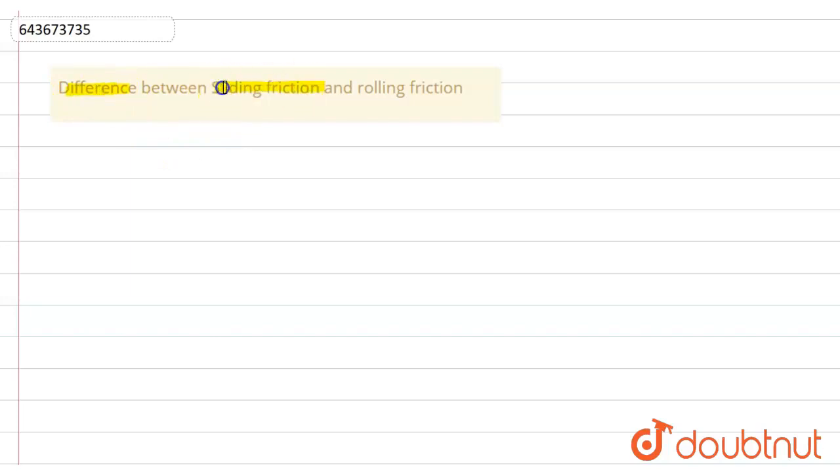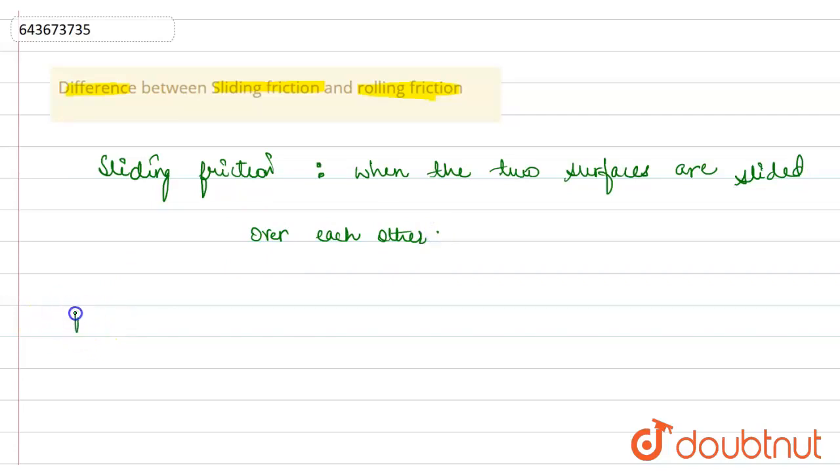Sliding friction is the friction that is created when two surfaces are slid over each other. Whereas rolling friction is the friction when two surfaces are rolled against each other.